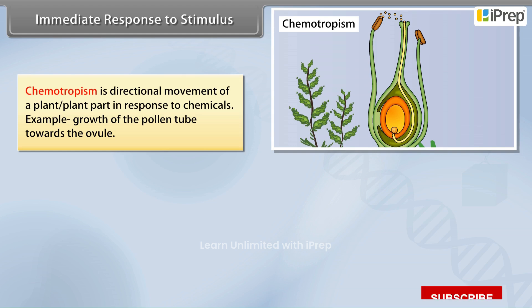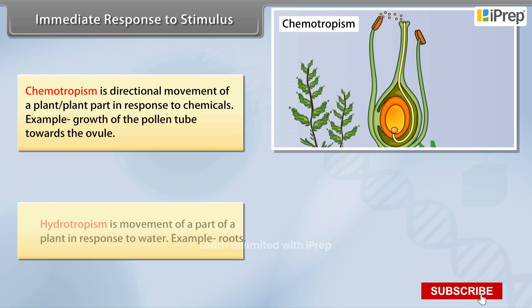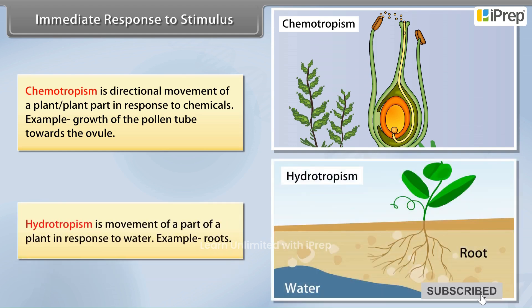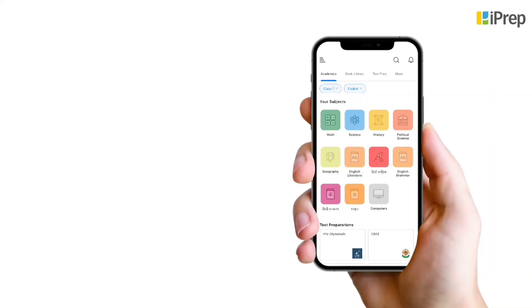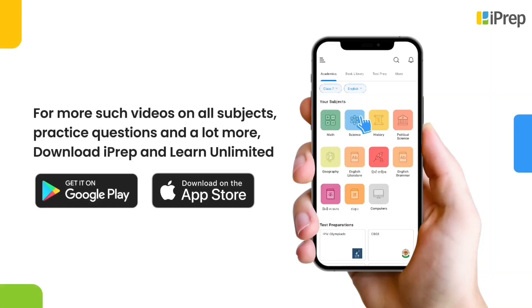An example of chemotropism is the growth of the pollen tube towards the ovule. Hydrotropism is the movement of a part of a plant in response to water, where roots grow towards a water source.